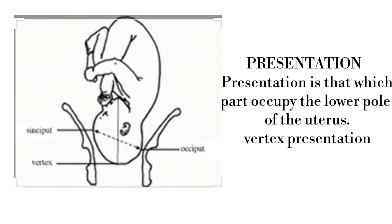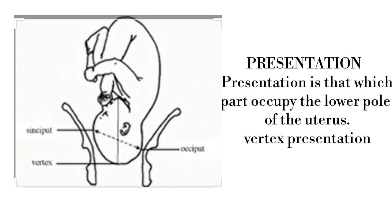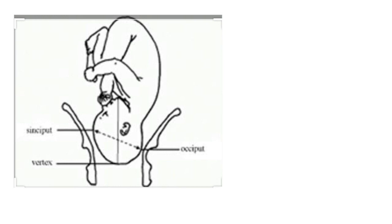In cephalic presentation, there are three presenting parts: vertex, brow, and face. The commonest presenting part is the vertex. Here, we can see the fetal head and specifically the vertex portion is the common part presenting, so the presentation is vertex presentation.